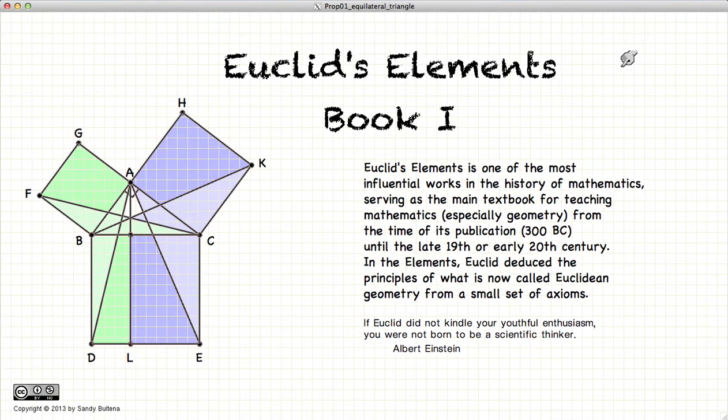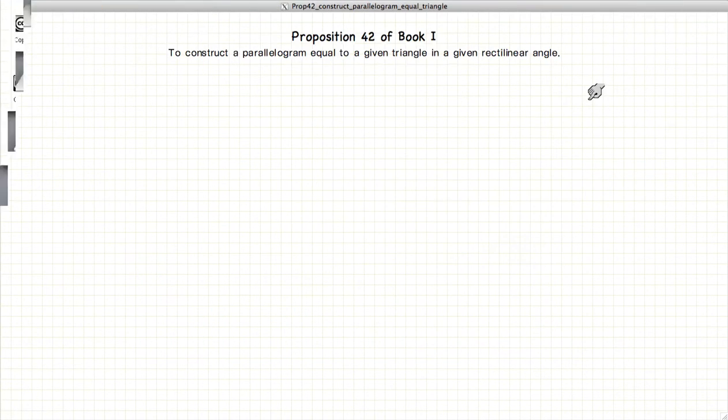Hi, and welcome to my tutorials on Euclid's Elements, Book 1. This video presentation is going to be on Proposition 42 of Book 1, which gives us the methods to draw a parallelogram with the following constraints.